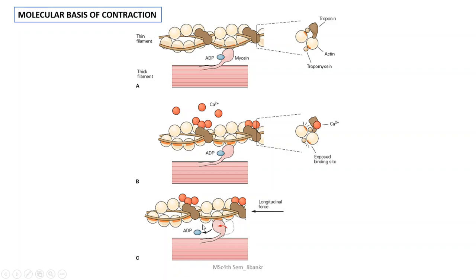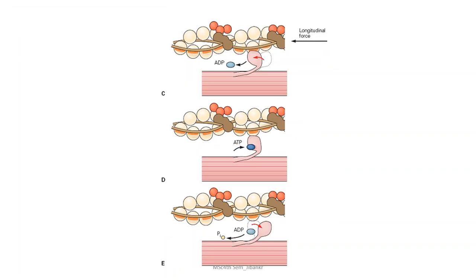This step is called the power stroke. After the ADP has been released from the myosin head, the myosin will remain in this contracted state unless an ATP binds to the myosin head again.